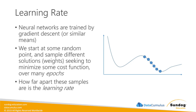We have many epochs — iterations over which we train. At each epoch, we try a different set of weights on our neural network, trying to minimize some cost function, which might be the overall accuracy on our validation set. If we boil this down into a two-dimensional graph, we're sampling different points along a curve of solutions, trying to find the lowest point — that's gradient descent.